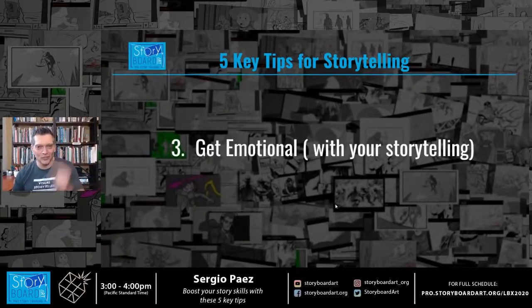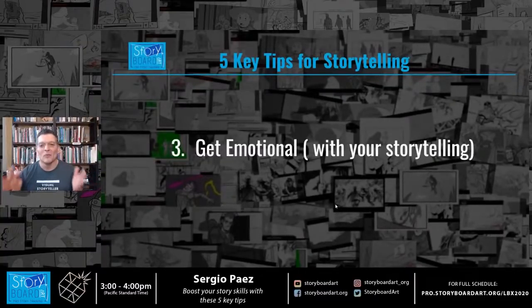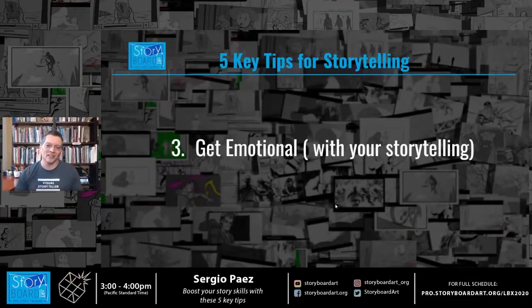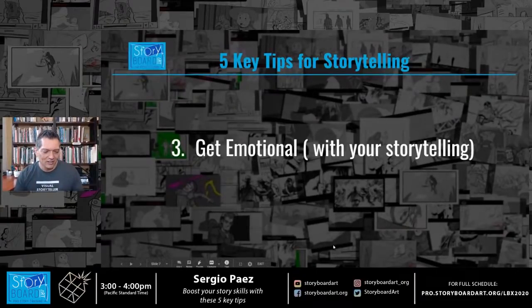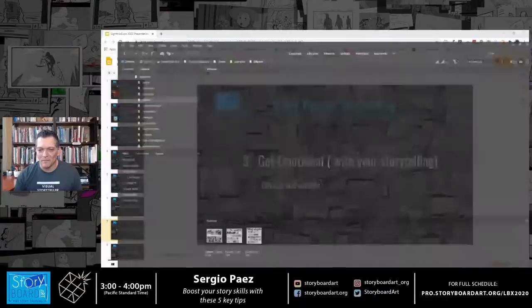As a story artist you're essentially writing — but you're writing with images. Tip number three is: get emotional with your storytelling. You don't have to sit there and cry, but get emotional with the drawings you're doing. Let me share an example.